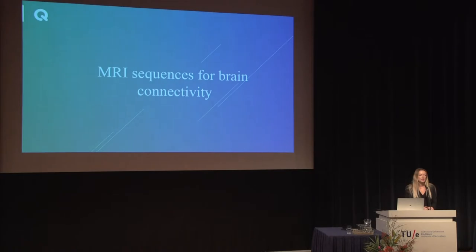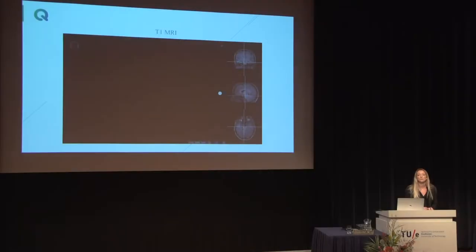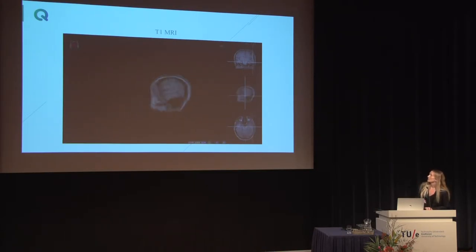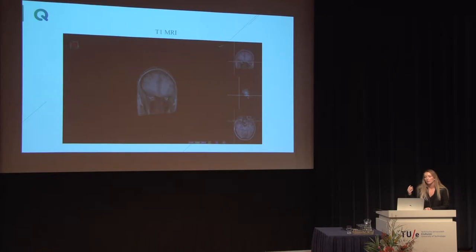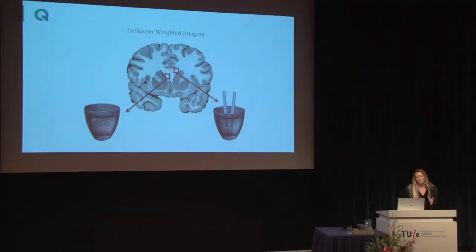Talking about which MRI sequences can help us do brain connectivity visualization: you can program an MRI scanner in many different ways. One important sequence is the T1, and this is actually my brain. With this sequence, you can nicely delineate white matter from grey matter, which is important not only for visualization but also for quantification. Another sequence I'm an expert in — that I finished my PhD on — is diffusion-weighted imaging, which Remco and Luke already talked about a little.